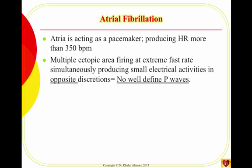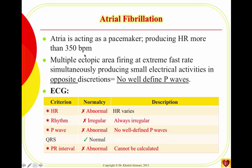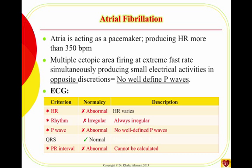On the ECG, heart rate varies - it could be controlled, meaning normal between 60 to 100, or higher, which we call uncontrolled or rapid ventricular response. The rhythm is always irregular since it's fibrillation. There is no P wave. The QRS is normal since it's an atrial problem. The PR interval cannot be calculated. All you need to identify it: no P wave, irregular rhythm, normal QRS - that's atrial fibrillation.